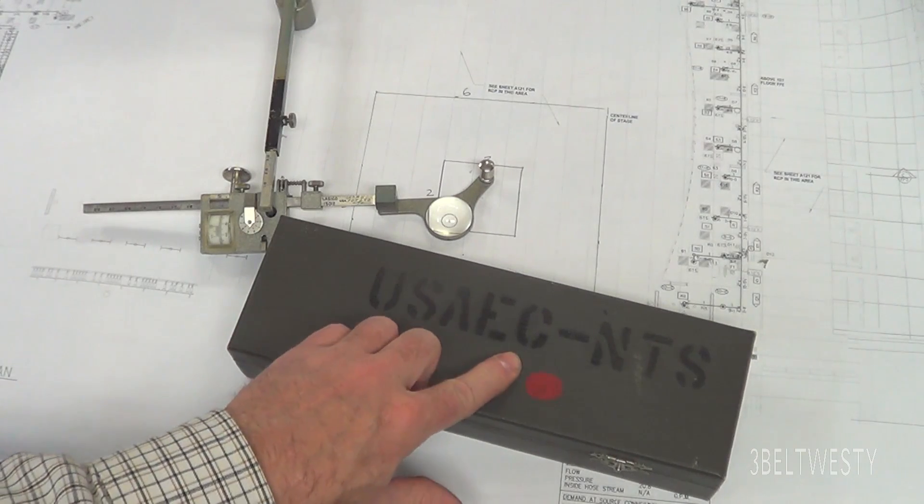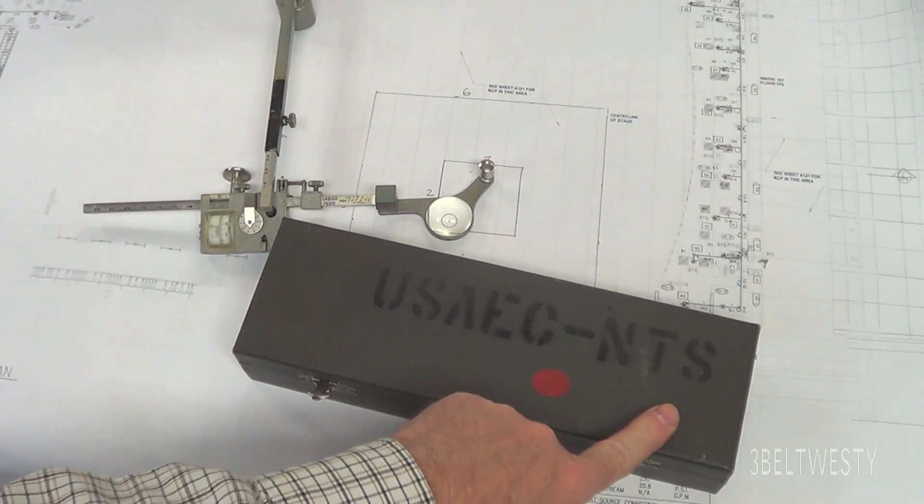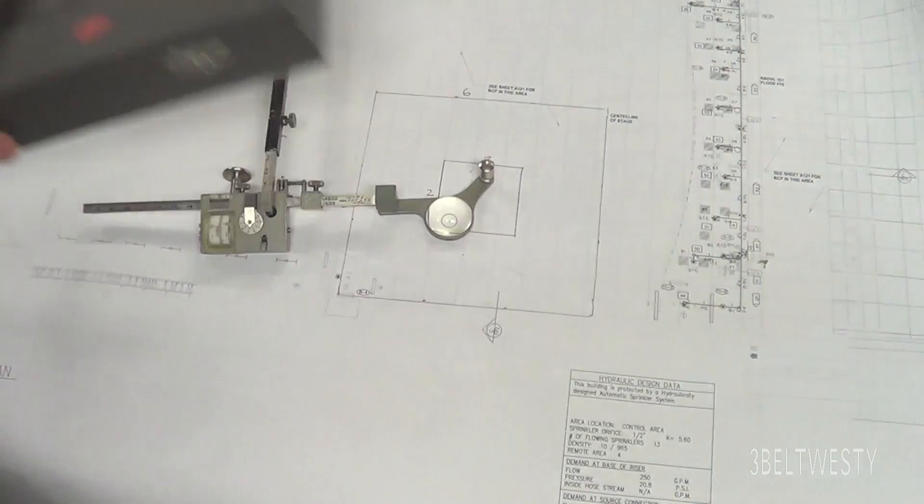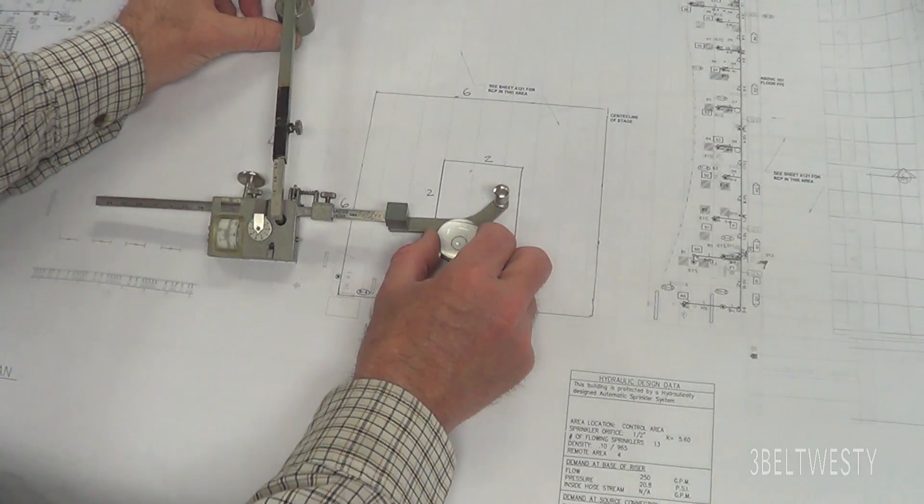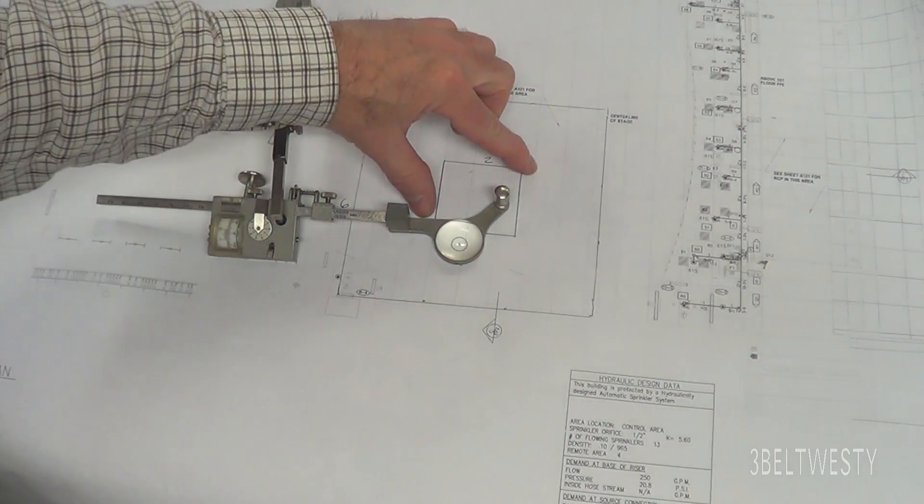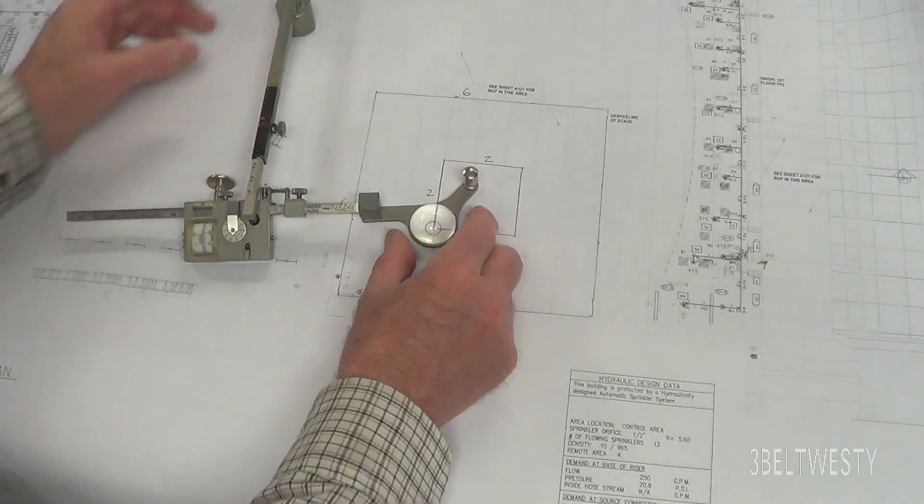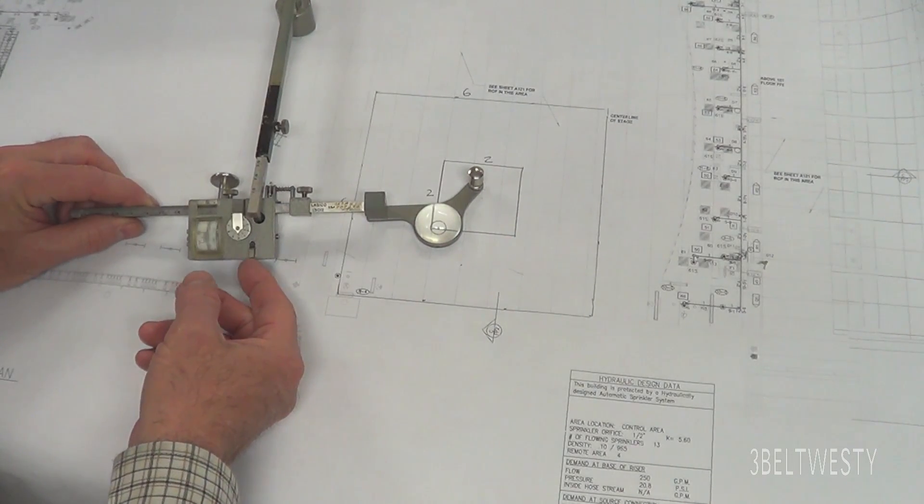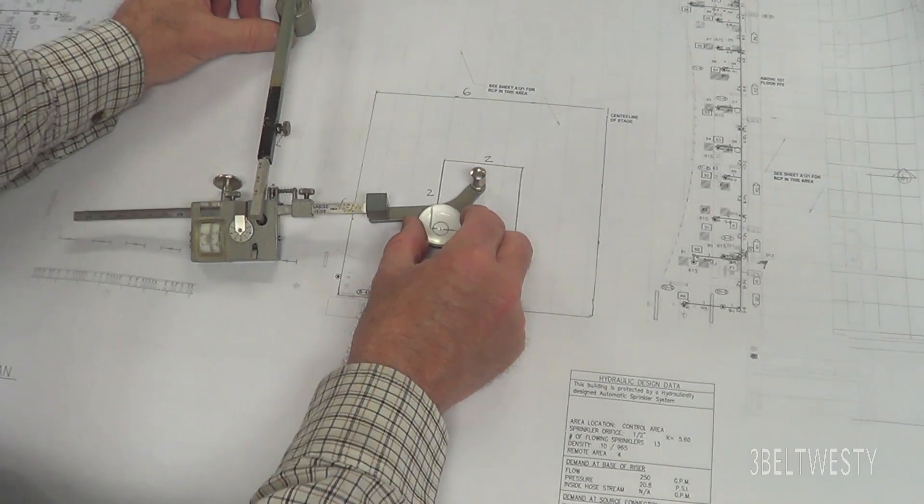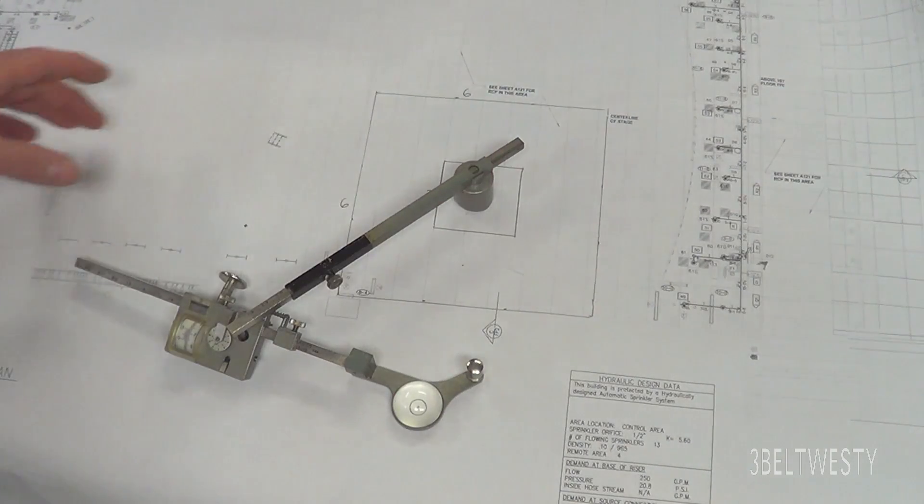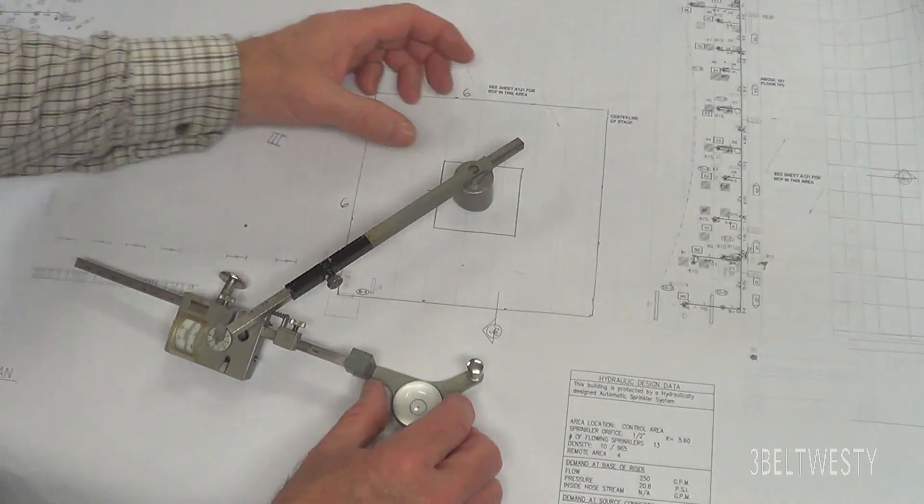Again, the normal configuration, you have the pole outside the figure. You set this here, zero it, and you run inside. The pole inside, you have this inside the figure you want to do, and of course you reset the zero.